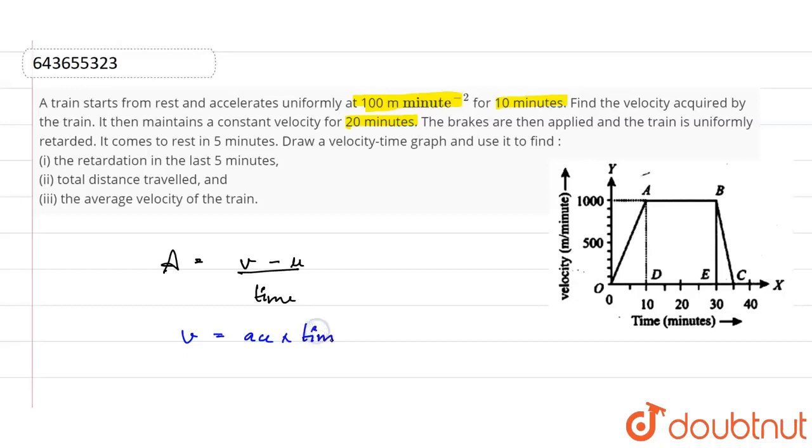Multiplied by time interval. So now, this is going to be 100 meter per minute squared multiplied by 10 minutes equals 1000 meter per minute. This is our final velocity, meter per minute. So we know our final velocity now.